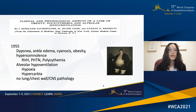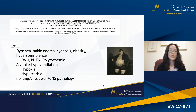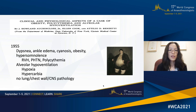Obesity hypoventilation was first described in 1955 in a case report by Aachen-Klaas et al. They described a young man who presented with dyspnea, ankylodema, cyanosis, obesity, and hypersomnolence — common features in patients with OHS. He had right ventricular hypertrophy, pulmonary hypertension, and polycythemia. He was found to have alveolar hypoventilation evidenced by hypoxia and hypercarbia, and did not have any lung, chest wall, or CNS pathology to explain these findings.